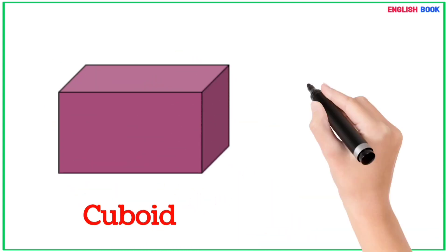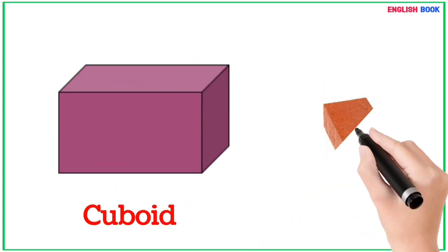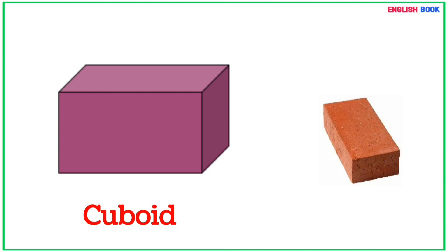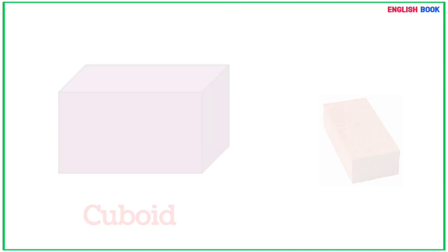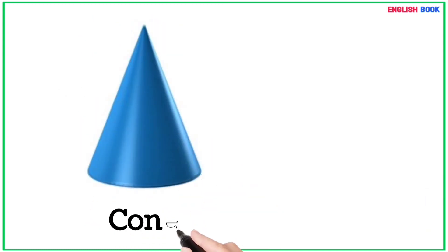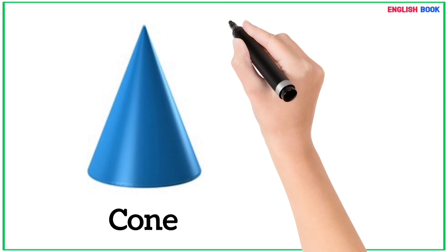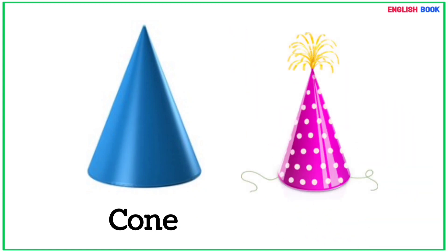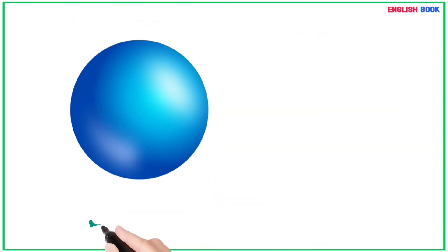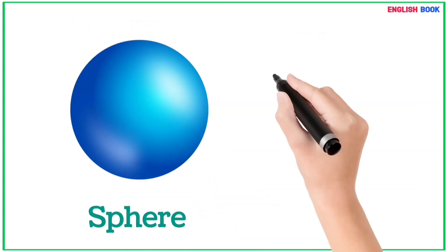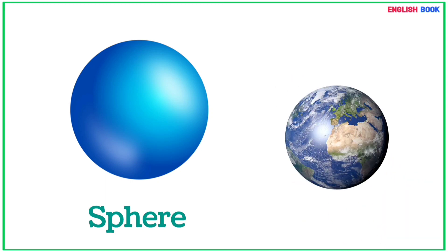Cuboid - brick is a cuboid shape object. Cone - this birthday cap is a cone shape object. Sphere - earth is a sphere shape object.